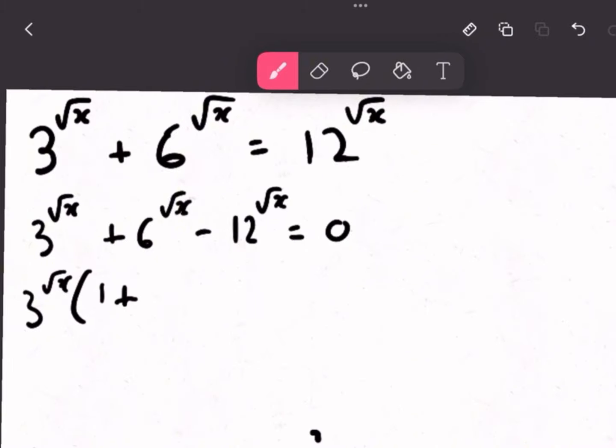Now, we'll factorize the 3 to the power of root x, and you'll get 1 plus 2 to the power of root x minus 4 root to the power of x equals 0.